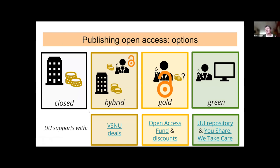We'll be talking about your options for Open Access publishing. That can either be in so-called hybrid journals — regular subscription journals that allow you to publish Open Access, usually for a fee — or in full gold Open Access journals, which only publish Open Access articles and sometimes charge a fee but often don't. The third option is green Open Access: sharing a version of your article, either the published version or the author accepted manuscript, in a repository like the Utrecht University repository.